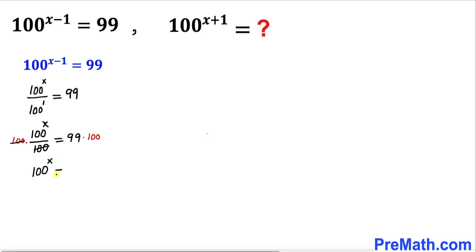9900 on the right hand side. Now we are going to manipulate this equation by multiplying both sides by 100. Now we know that this 100 is the same as 100 power 1.